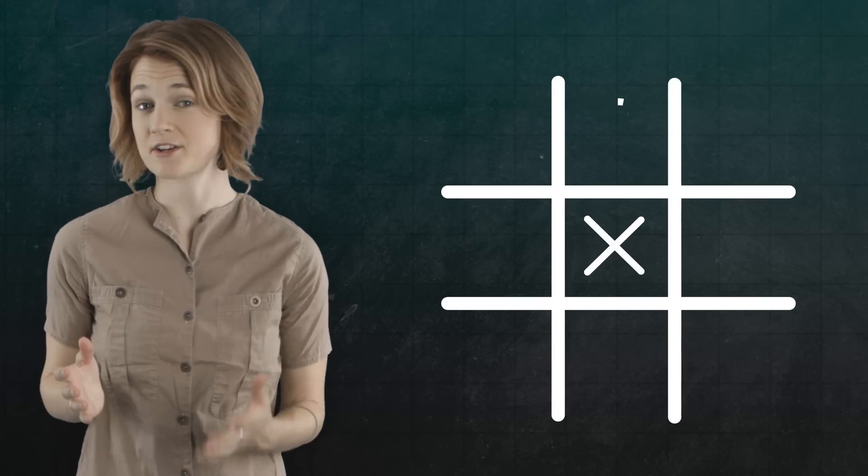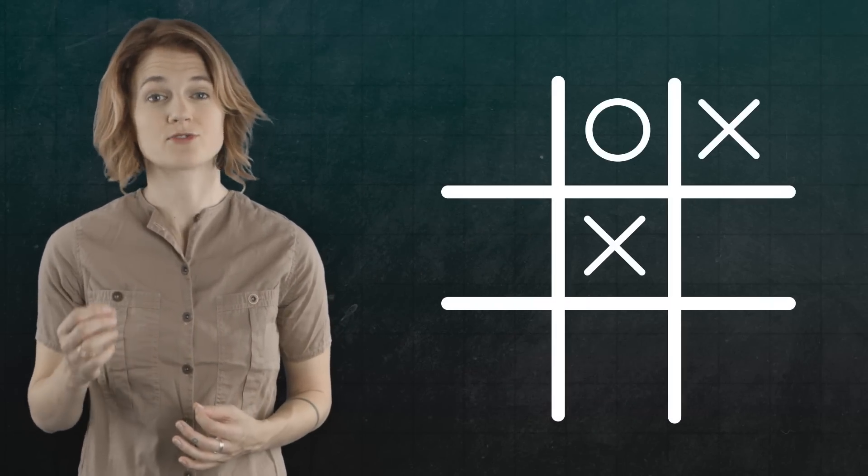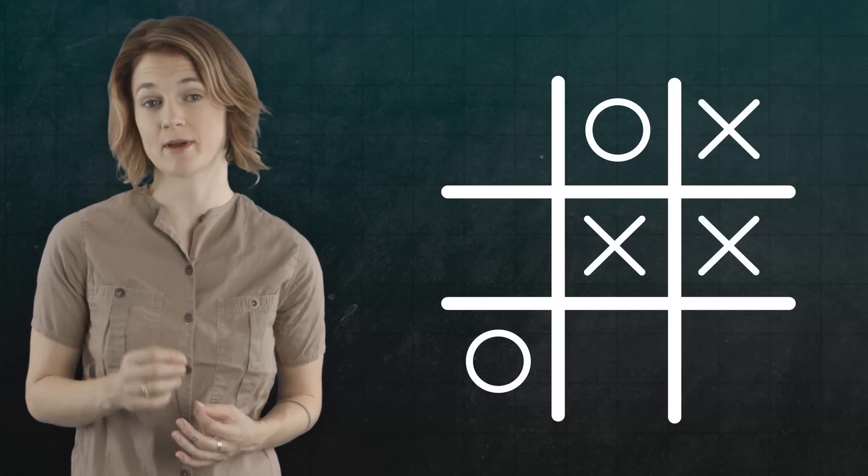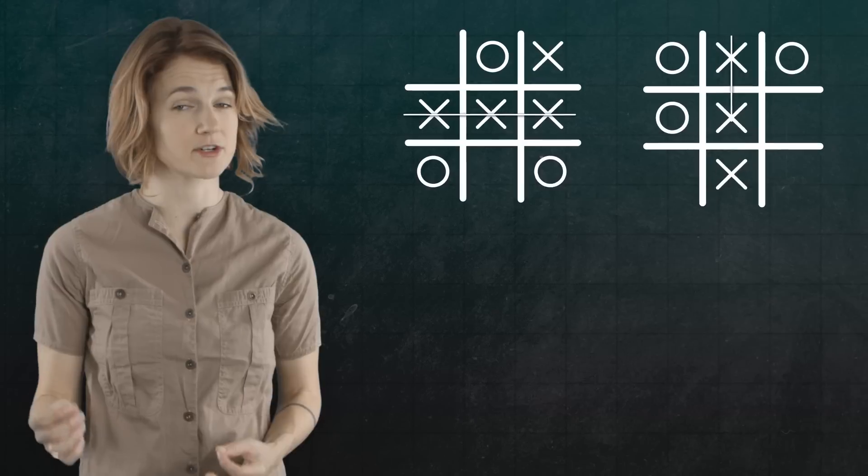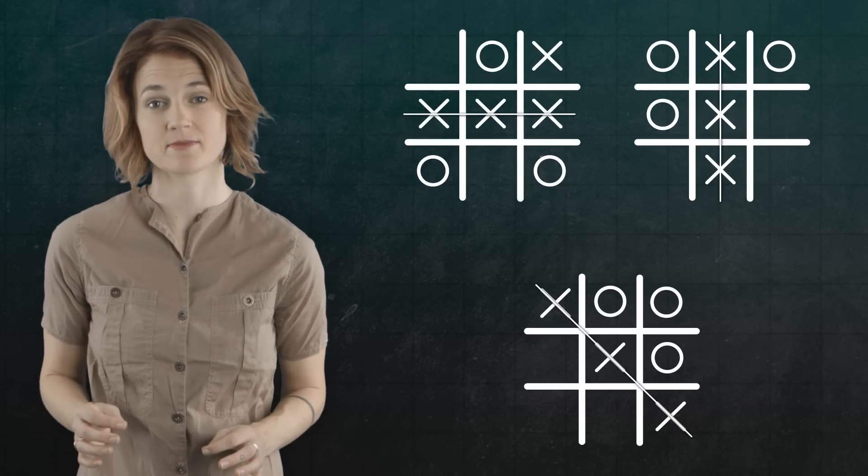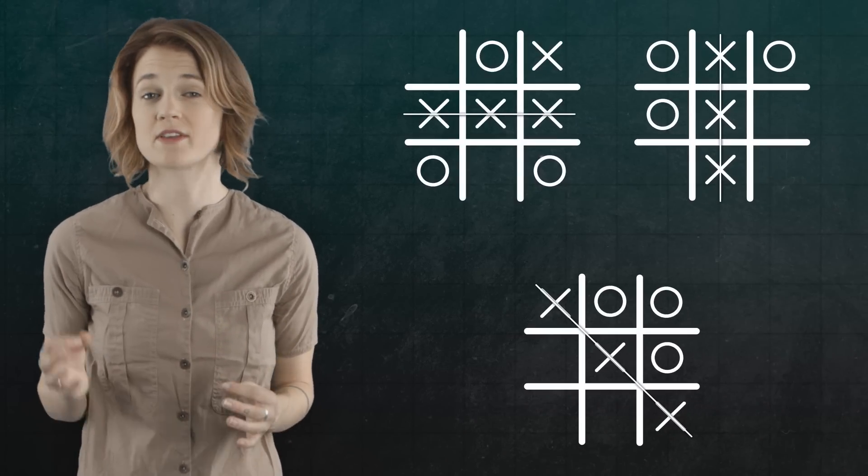Tic-tac-toe is a classic game. Two players, X and O, take alternating turns drawing their respective symbols on one square of a 3x3 board. The first player to get three in a row, either horizontally, vertically, or diagonally, wins. For the sake of convention, we'll say that X always goes first. If both players are playing optimally, meaning that they always make the best possible move, then tic-tac-toe will always end in a tie.